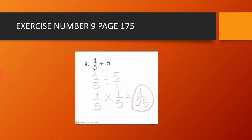Exercise number 9, page 175. We have 1 over 5 divided by 5. We write the 5 as a fraction, so it becomes 1 over 5 divided by 5 over 1. We use the rule: keep, change, flip. So we have 1 over 5 times 1 over 5. 1 times 1 equals 1, and 5 times 5 equals 25. So the result of the division is equal to 1 over 25.